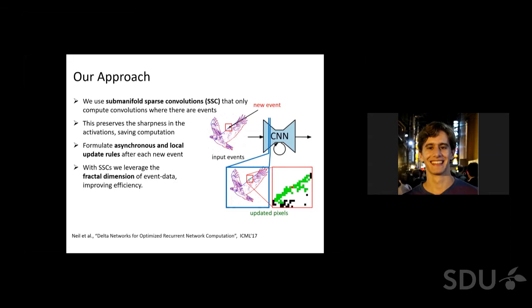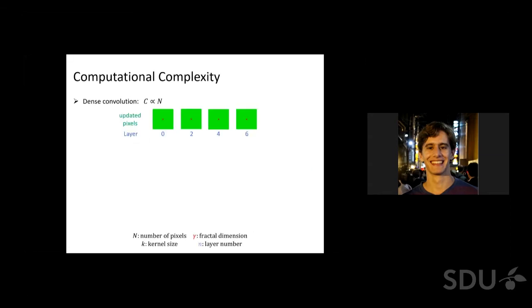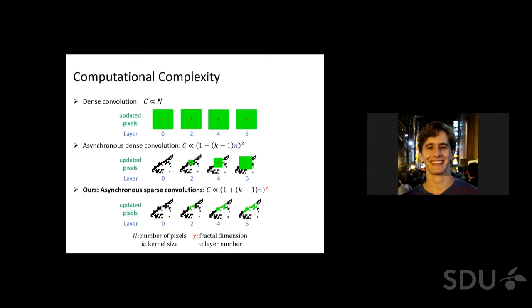Let me go into more detail on what this fractal dimension means. If we now put the computational complexity of different approaches on a scale, we see that our method combining asynchronous updates and sub-manifold sparse convolutions is computationally much more efficient than dense convolutions, where the computation scales with the number of pixels in each layer n. If we adopt local update rules using a dense convolution, we see that the number of pixels updated scales as the square of the network depth. On the other hand, if we use our method using asynchronous and sparse convolutions, we can see that the updated pixels actually scale with an exponent gamma smaller than 2, which leads to increased efficiency.